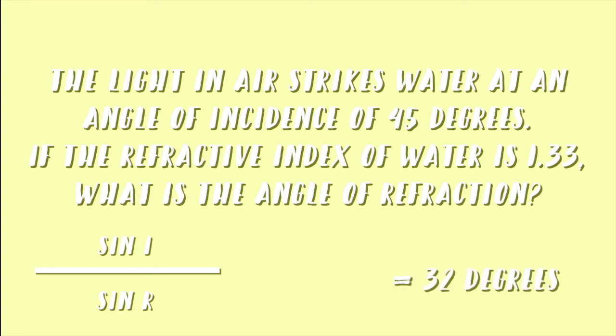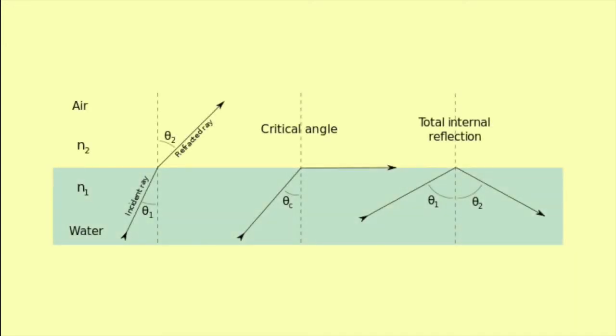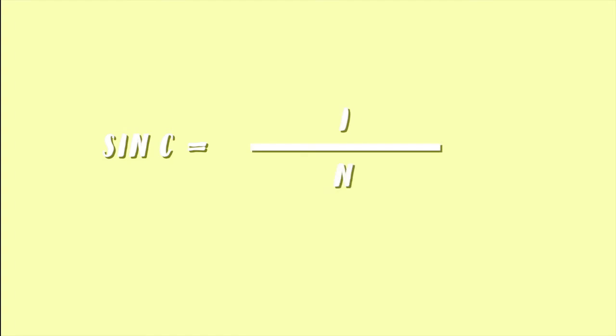Not all the light passing through a medium can be refracted. The inside of glass or other transparent materials can act as a mirror, depending on the angle at which the light strikes. The critical angle is the angle that makes an angle of refraction of 90 degrees. Total internal reflection happens when the angle of incidence is greater than the critical angle, causing all the light to be reflected internally, but none of the light is refracted. The value of the critical angle depends on the material. The critical angle C of any medium can be calculated using the equation: sin C equals 1 over N, where N is the refractive index.